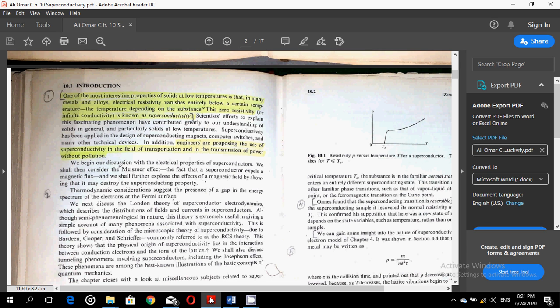This theory is extremely useful in giving a simple account of many phenomena associated with superconductivity. That is followed by consideration of the microscopic theory of superconductivity, due to Bardeen, Cooper and Schrieffer, commonly referred to as the BCS theory.